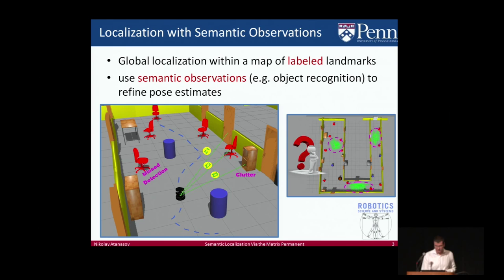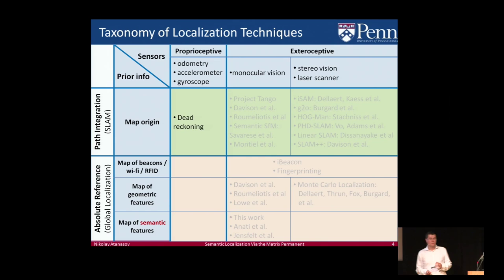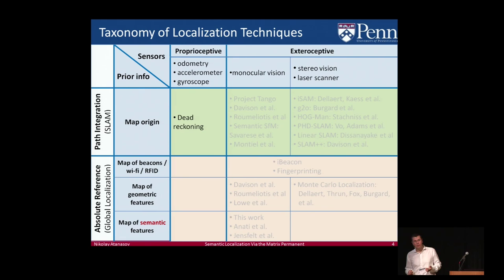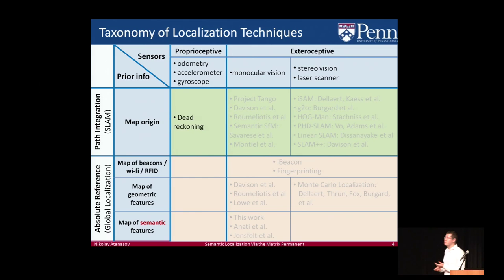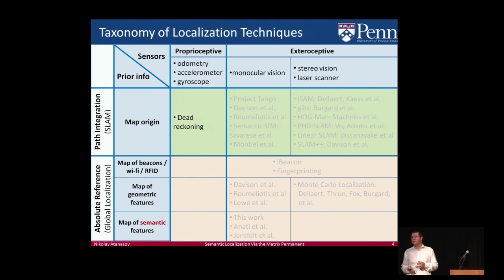How does this fit with existing techniques? We can characterize techniques based on sensor information — proprioceptive sensors give information about the robot's egomotion, or exteroceptive sensors give information about the environment — or by prior information, distinguishing between path integration techniques and absolute reference techniques. SLAM fits under path integration, for example, because the robot has information about its starting frame of reference but never has a connection with an anchor point in the global frame. Project Tango and related SLAM work are notable here.